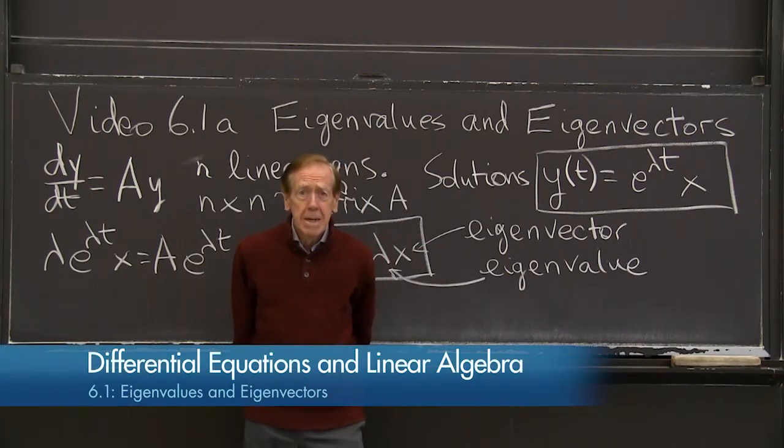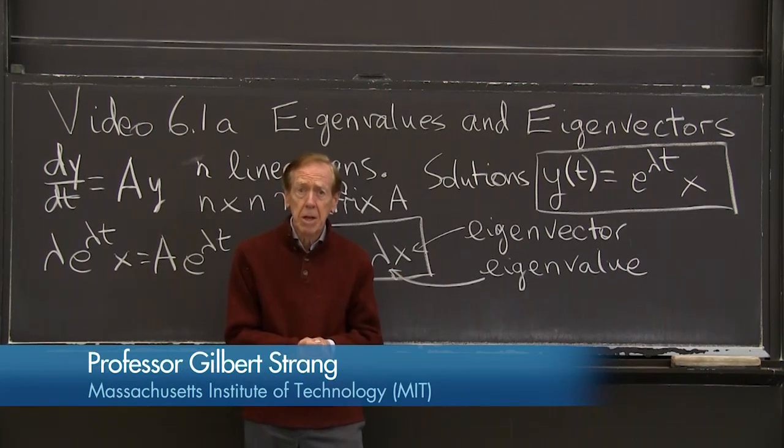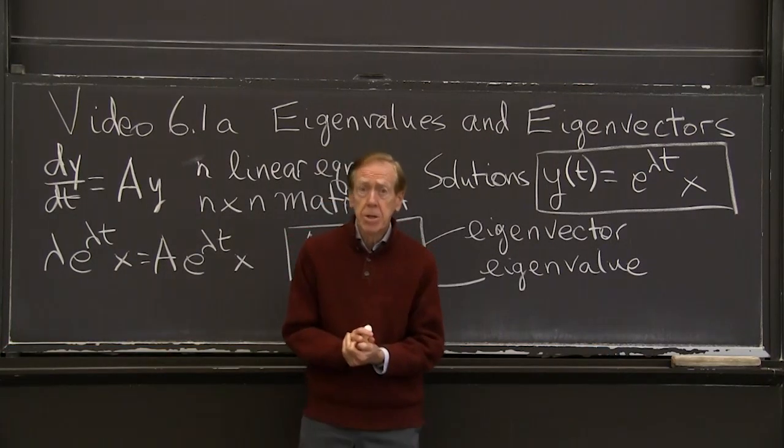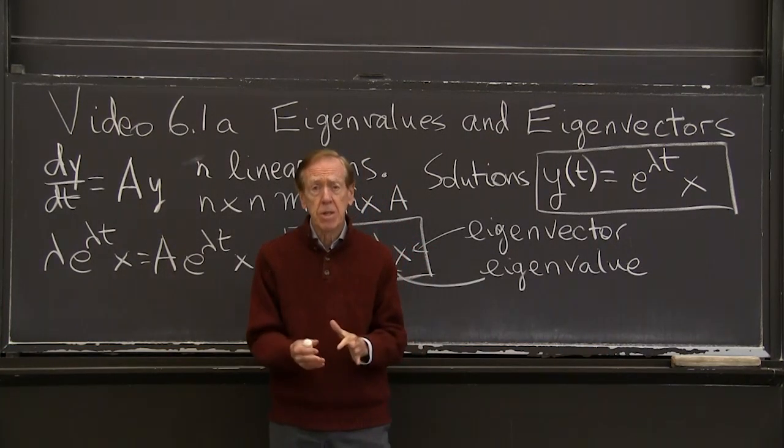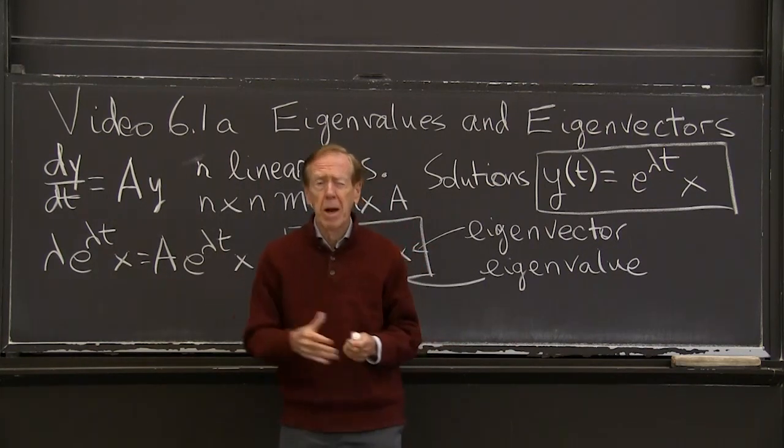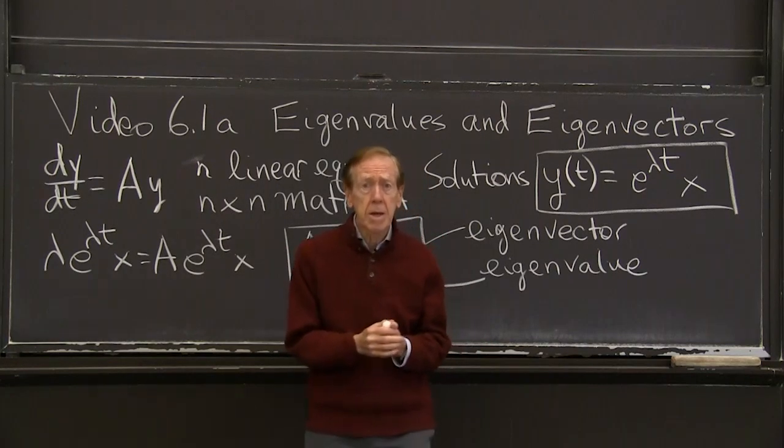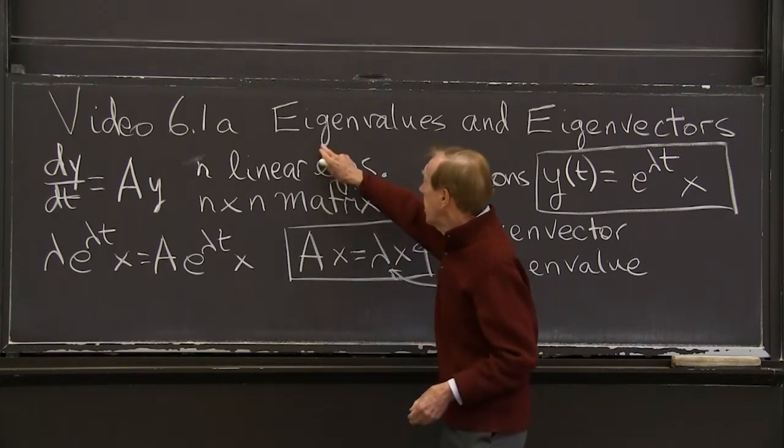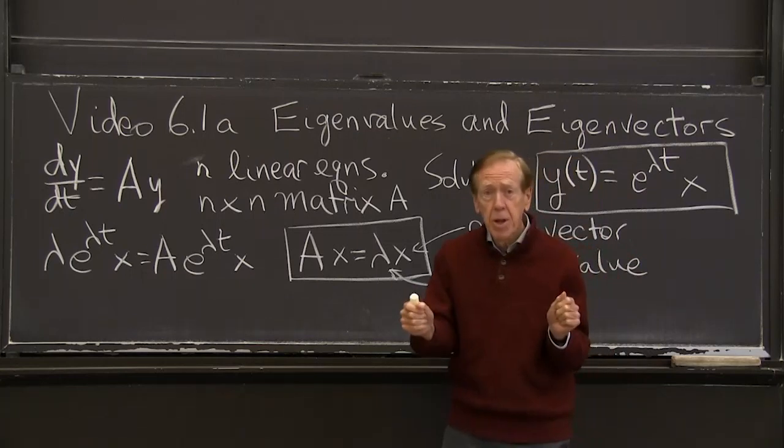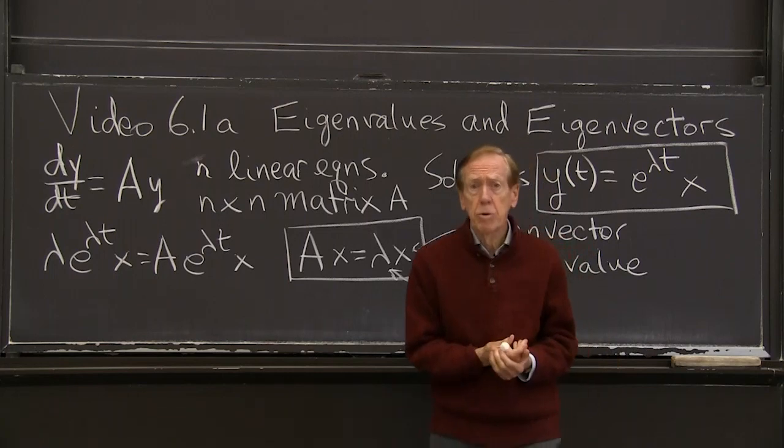OK. So today begins eigenvalues and eigenvectors. And the reason we want those, need those, is to solve systems of linear equations. Systems meaning more than one equation, N equations. N equals 2 in the examples here. So eigenvalue is a number, eigenvector is a vector. They're both hiding in the matrix. Once we find them, we can use them.